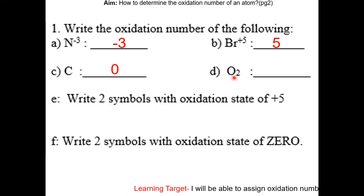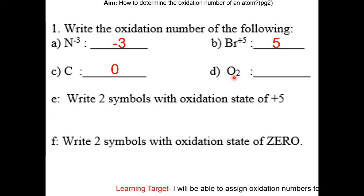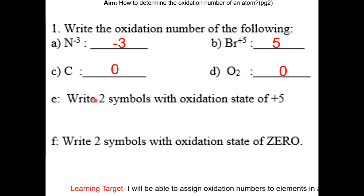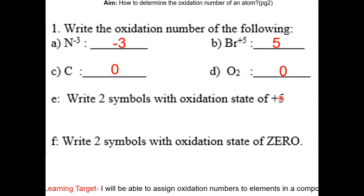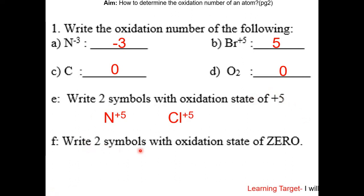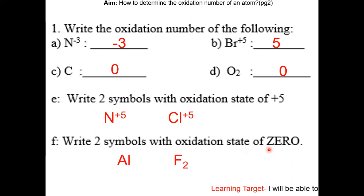For O2, the oxidation number is also zero because it's a single element and is neutral. Write two symbols with an oxidation state of positive five — here are two examples. Write two symbols with an oxidation state of zero — here are some examples.